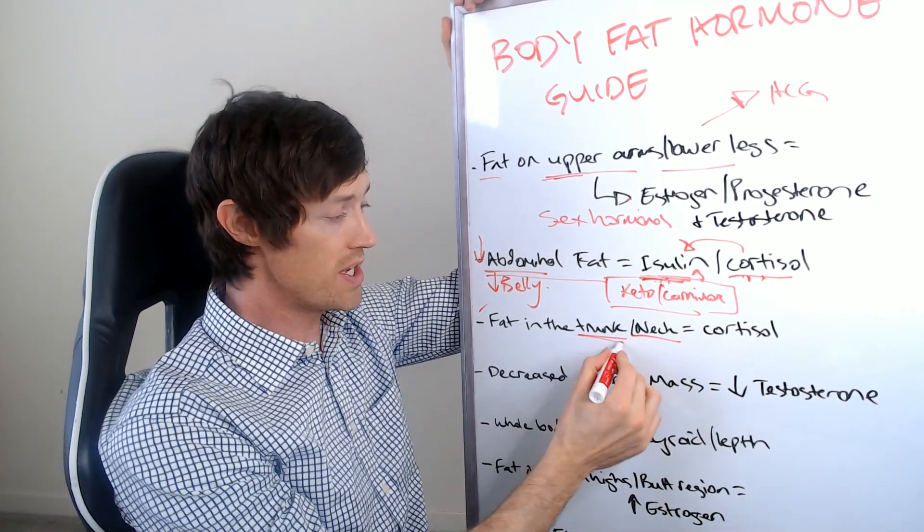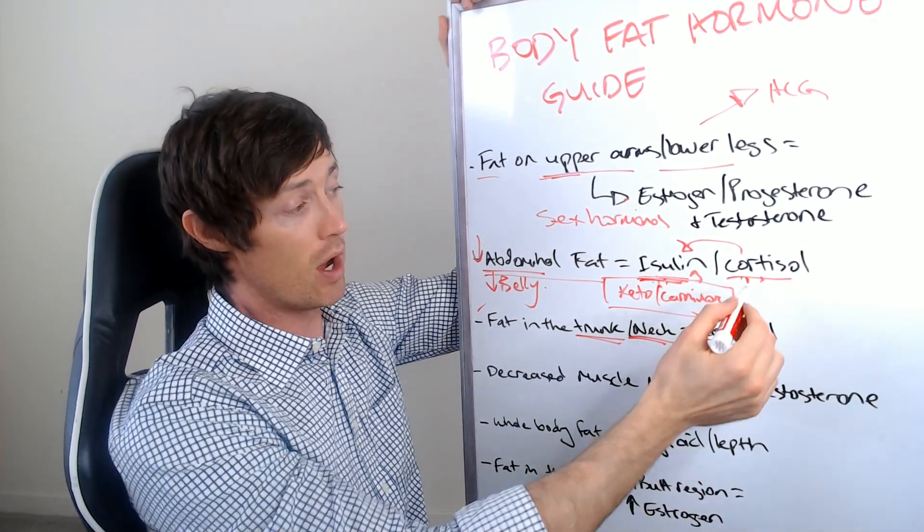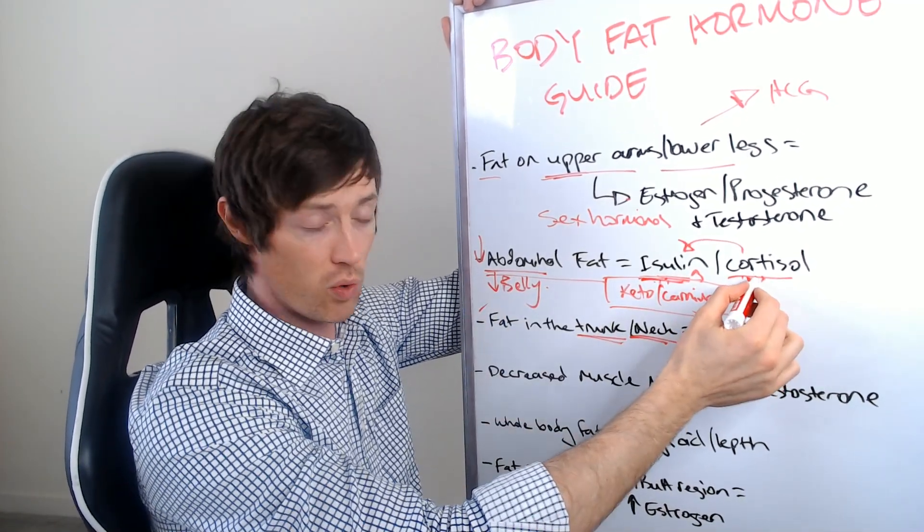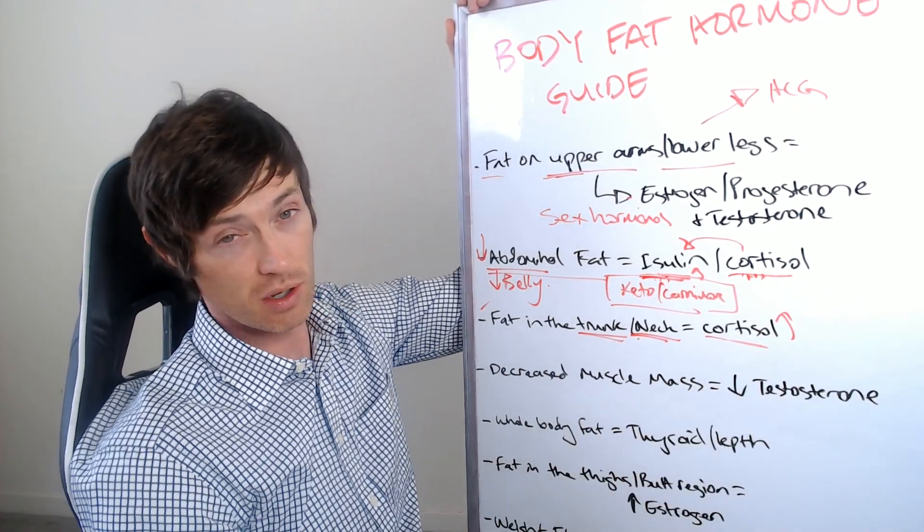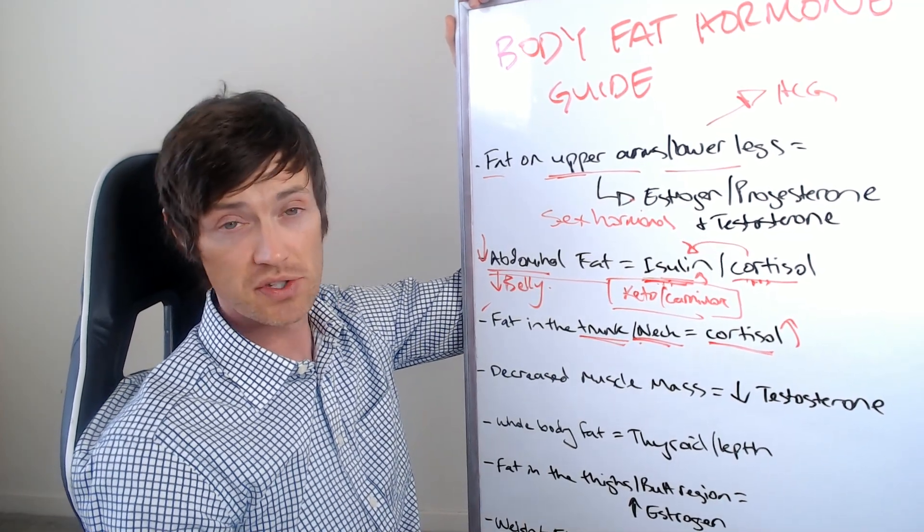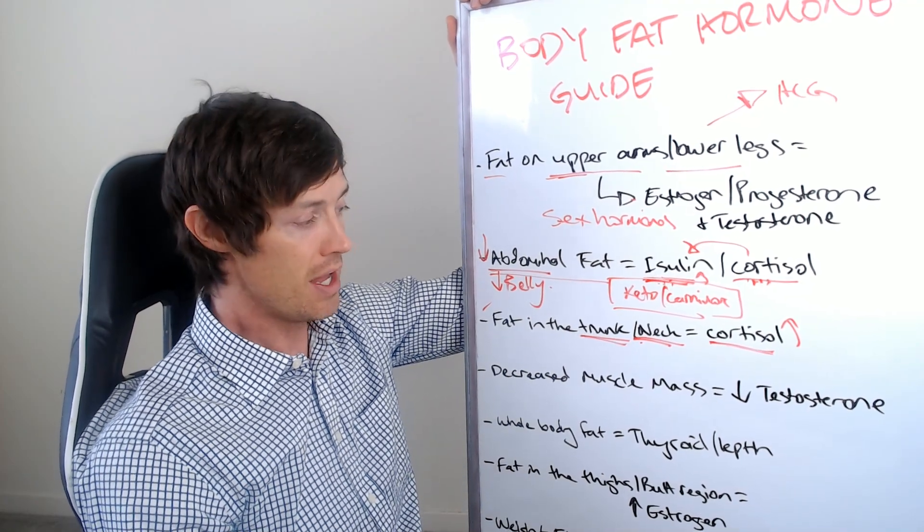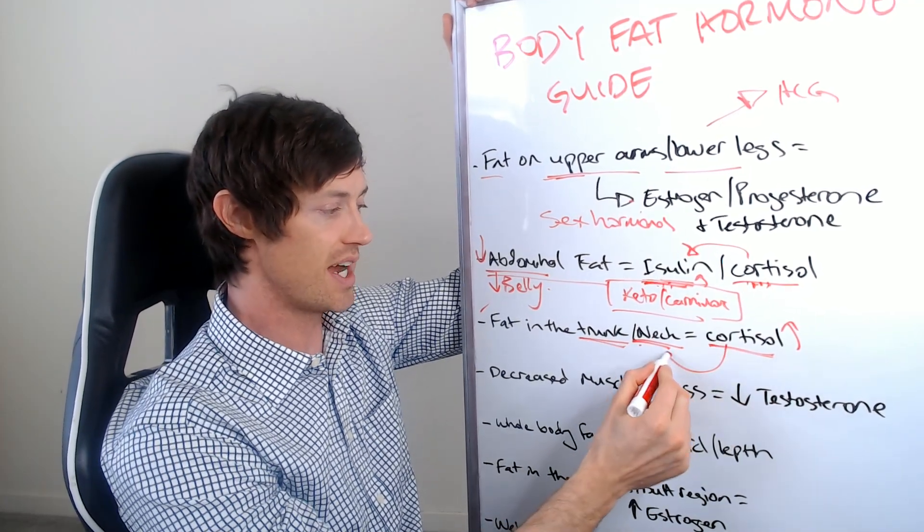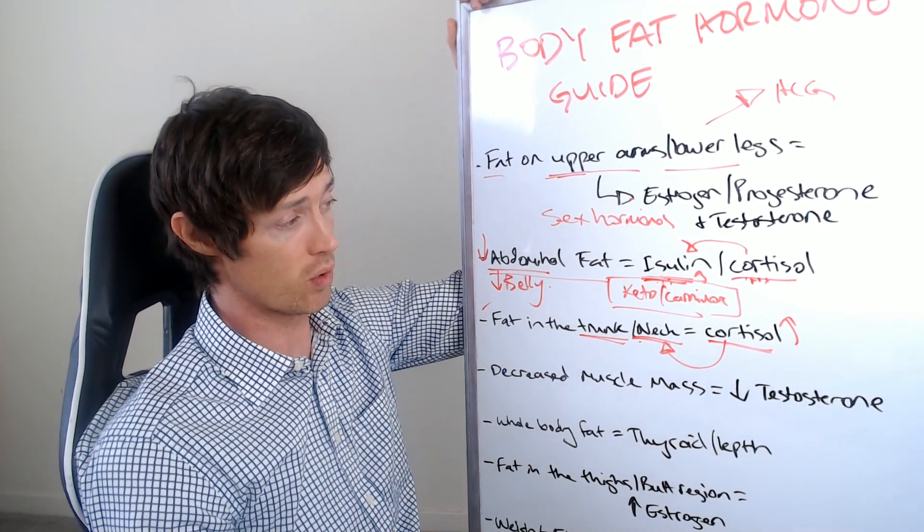So truncal obesity and/or obesity in the back of the neck is usually almost always a cortisol problem. Now I would say belly fat is a minor cortisol problem. As you get these sorts of issues, that means you have a pretty big cortisol problem. You may actually start to see elevations in your serum cortisol levels, or if you check a salivary cortisol, you'll see it actually start to become high.